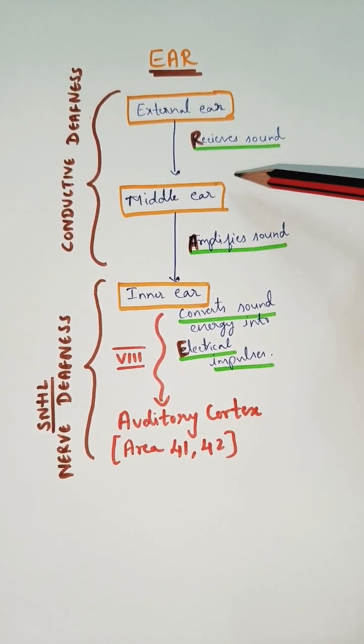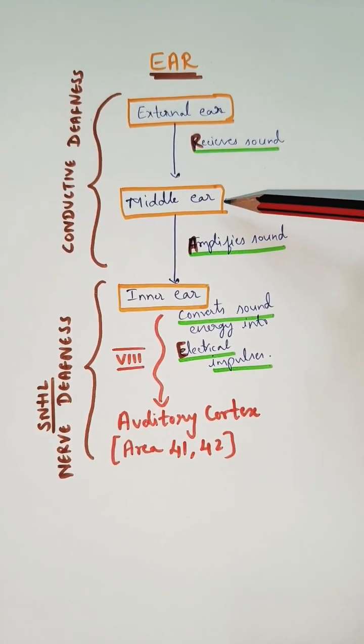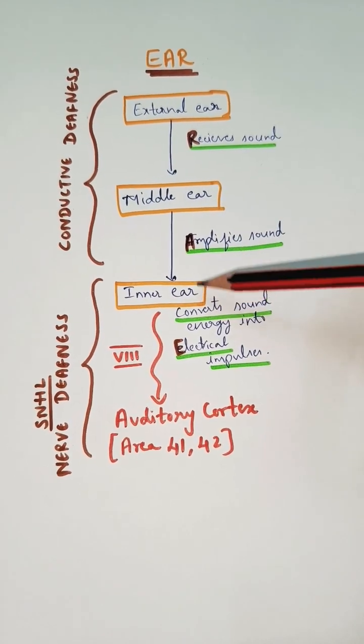The external ear's main function is to receive the sound and transmit it to the middle ear. The middle ear amplifies the sound and sends it to the inner ear.